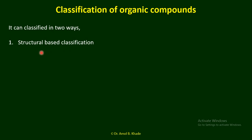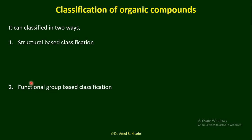The second type of classification of organic compounds is based on functionality — which functional group is present in the structure. For example, aldehyde is one functionality, ketone is another, and alcohol is another. Based on the functional group present in the structure, we can also divide organic compounds. So there are two types of classification.